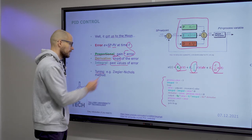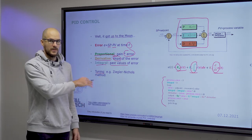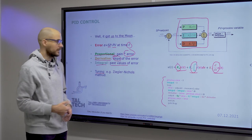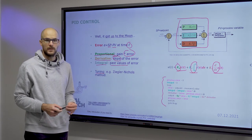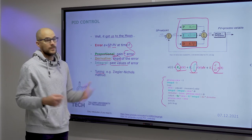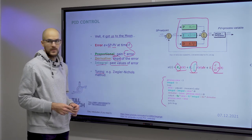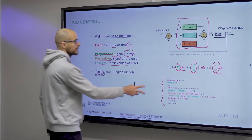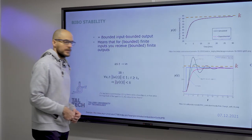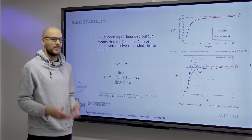And the tuning of these gains, well, you can do it manually, but there are semi-automatic methods, such as the Ziegler-Nichols method or even automatic tuning is possible in a program. And finding the optimal gain is the key to success.